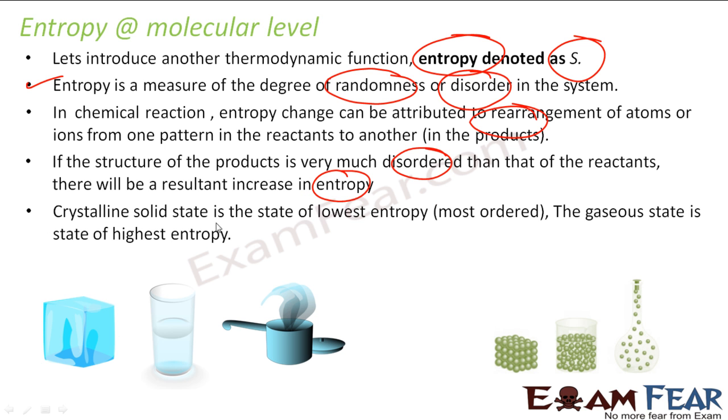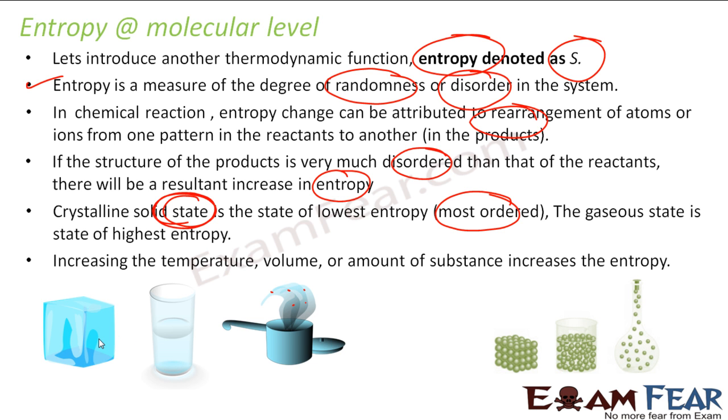If you see crystalline solids, they have the lowest entropy. All solid states have less entropy because the molecules have less space to move. They are ordered. But the gaseous state has the highest entropy because the intermolecular force is less and they keep moving around. The liquid is the intermediate one.